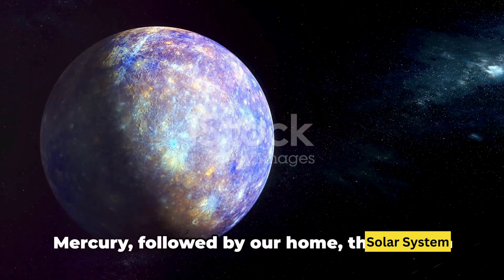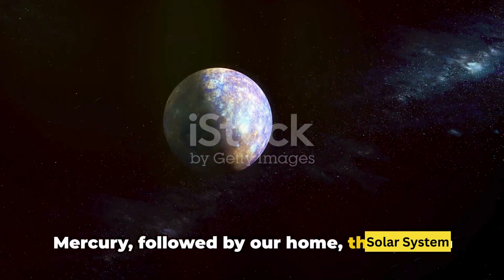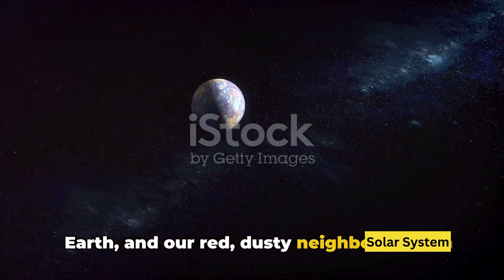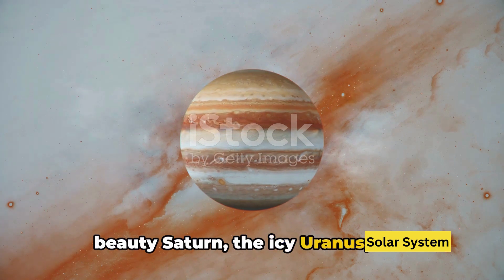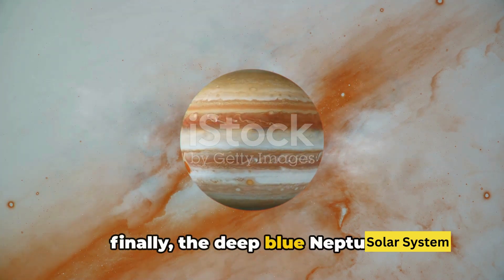Closest to the sun, we have the swift Mercury, followed by our home, the vibrant Earth, and our red, dusty neighbor, Mars. Then comes the mighty Jupiter, the ringed-beauty Saturn, the icy Uranus, and finally, the deep blue Neptune.